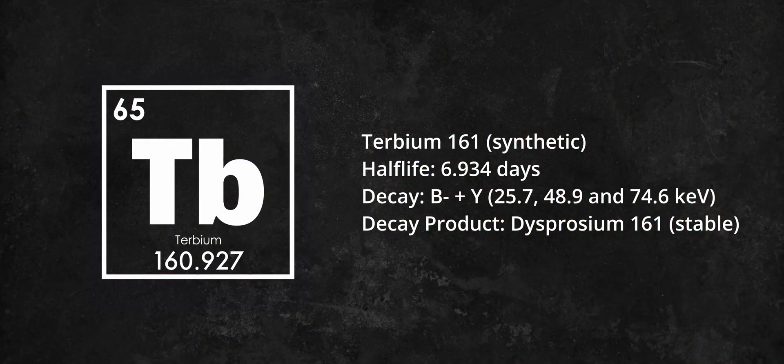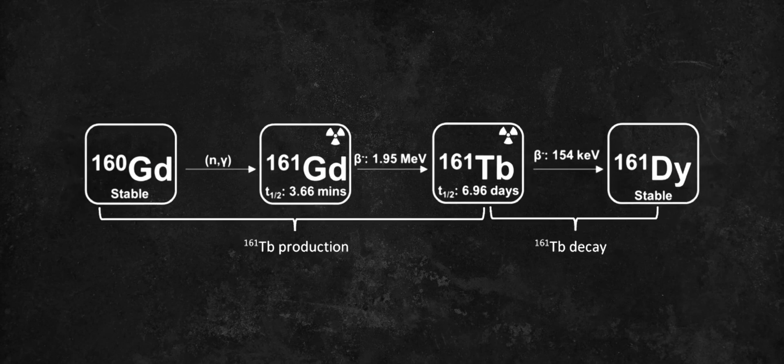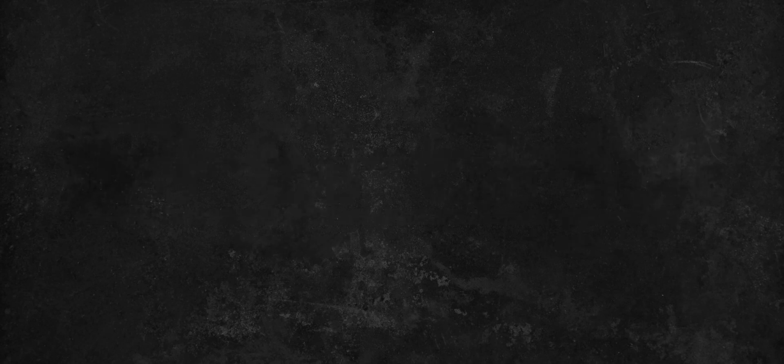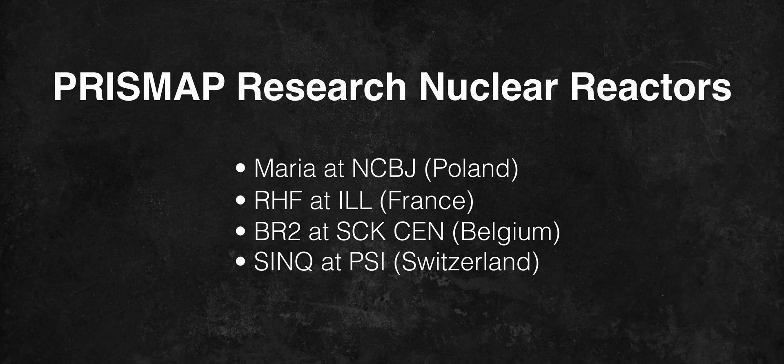Terbium-161 is a short-lived radioactive isotope of Terbium, and it is produced by the irradiation of stable gadolinium-160 in the Prismap network of research nuclear reactors.